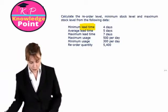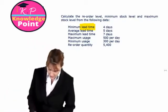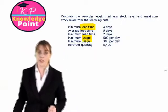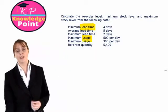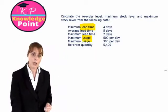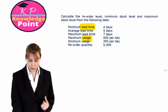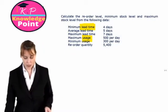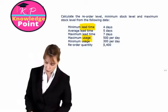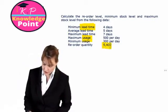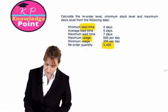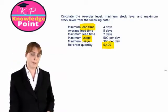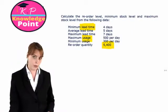The other information we've been given is about usage — our demand for that piece of stock, how much we use per day. And then we have our reorder quantity, which is the number of units we order with our supplier each time we place an order.